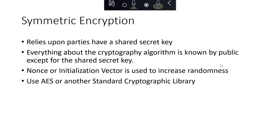An example of symmetric encryption is AES, the Advanced Encryption Standard, and there are other cryptographic libraries based on symmetric encryption. The basic idea is both parties have to have a copy of that shared secret key. If an attacker can get a copy of it, then the attacker can read the message. One question you might ask is: how does Bob get a copy of the shared secret key from Alice without letting a hacker get a copy of it?